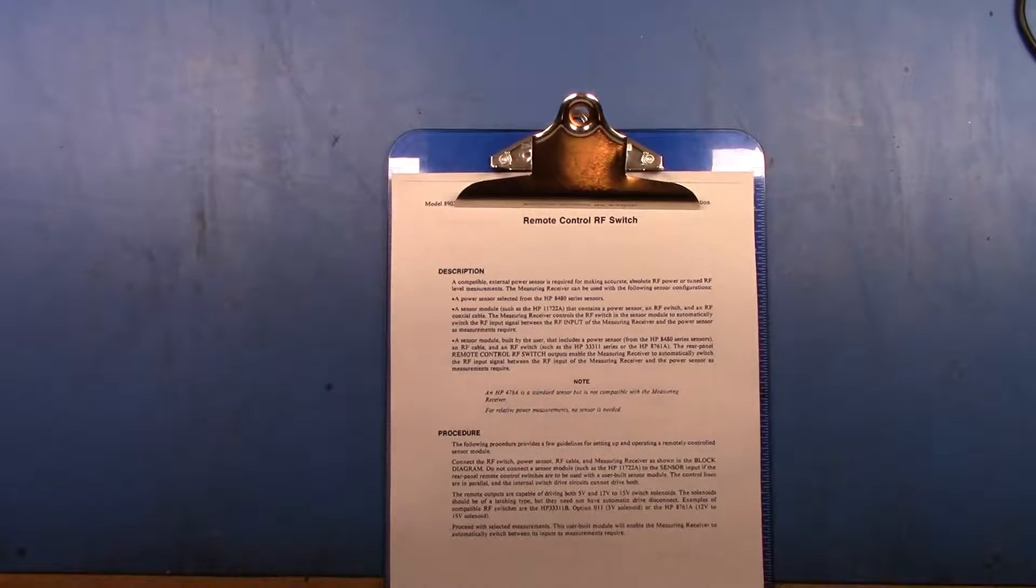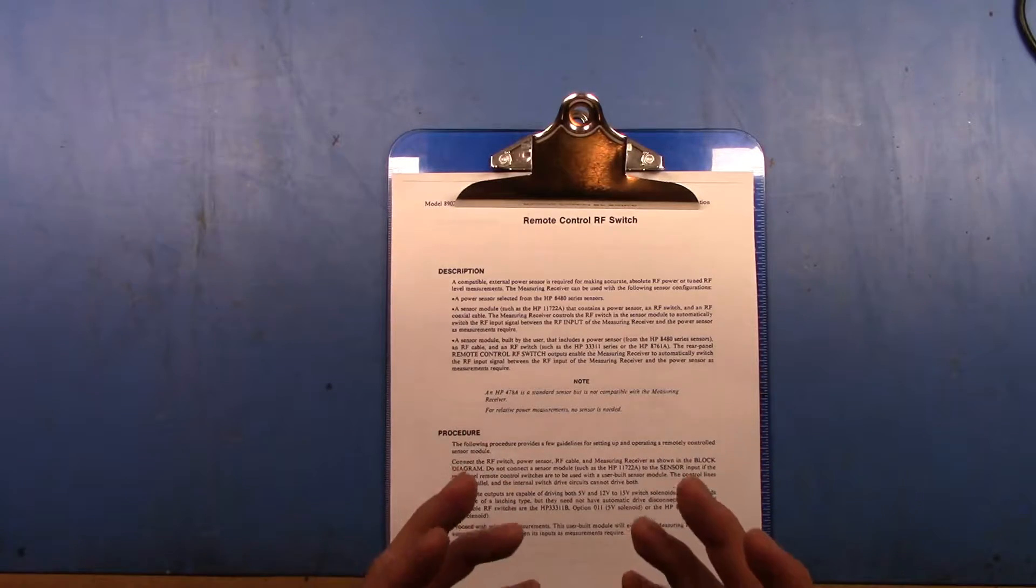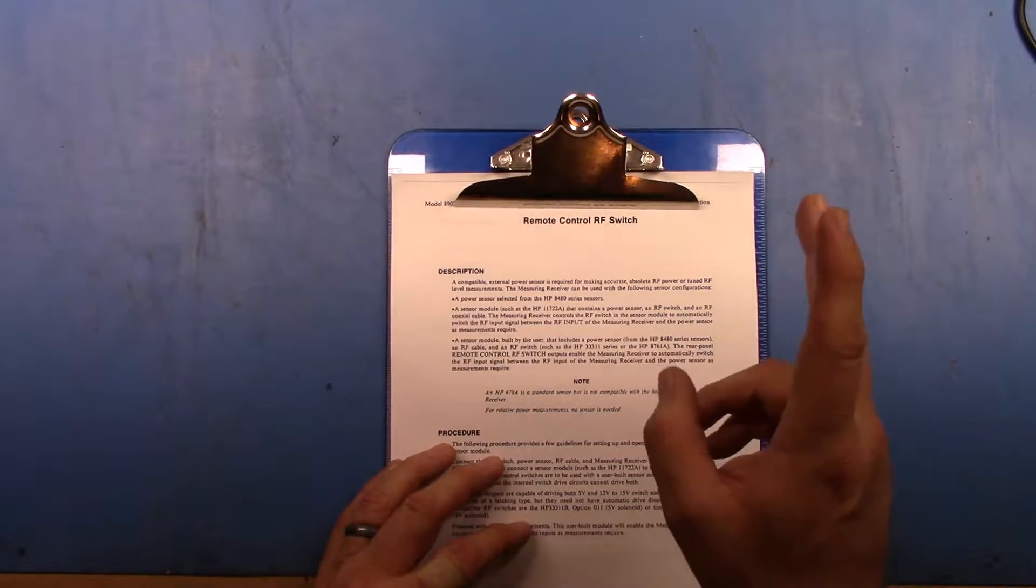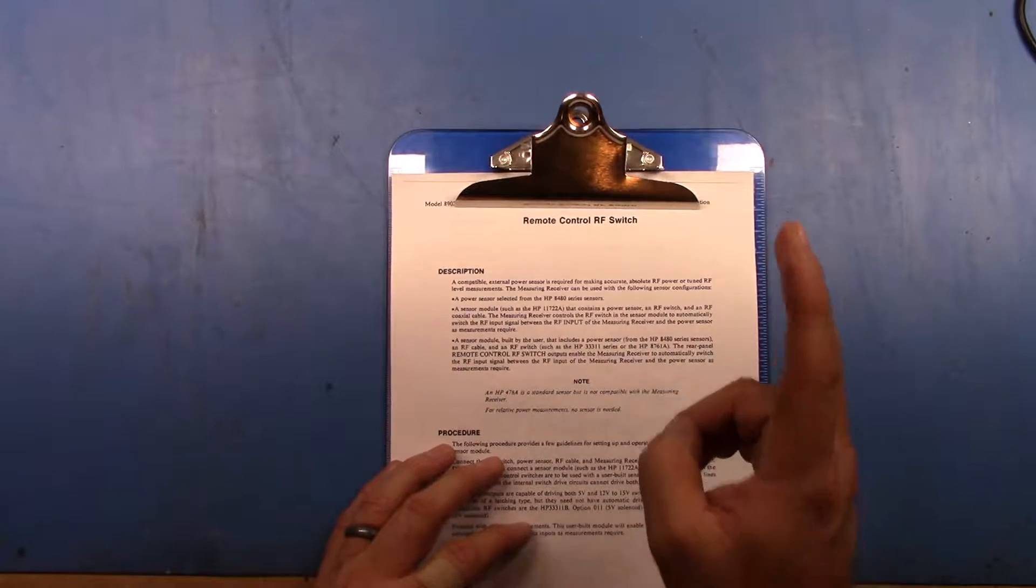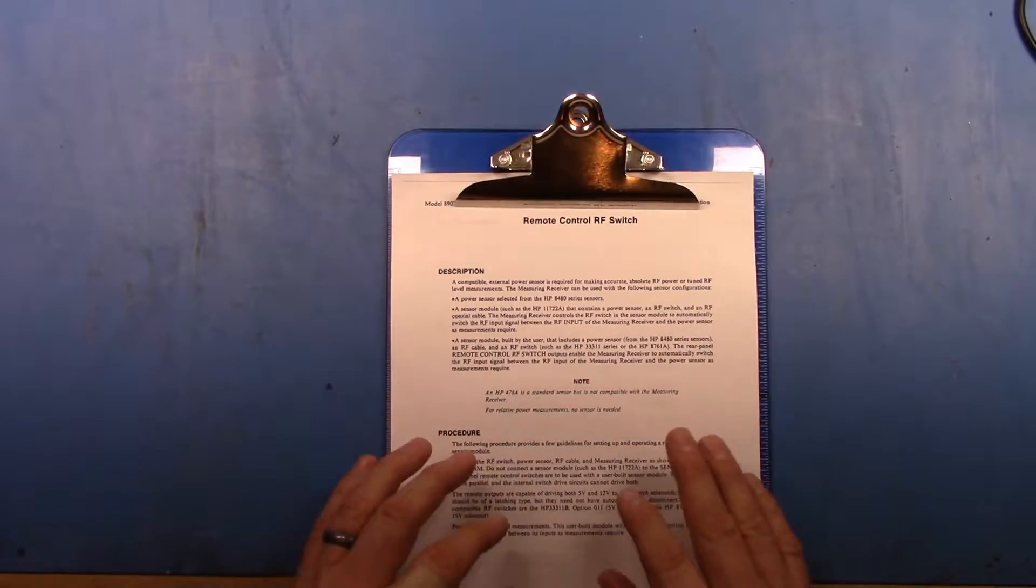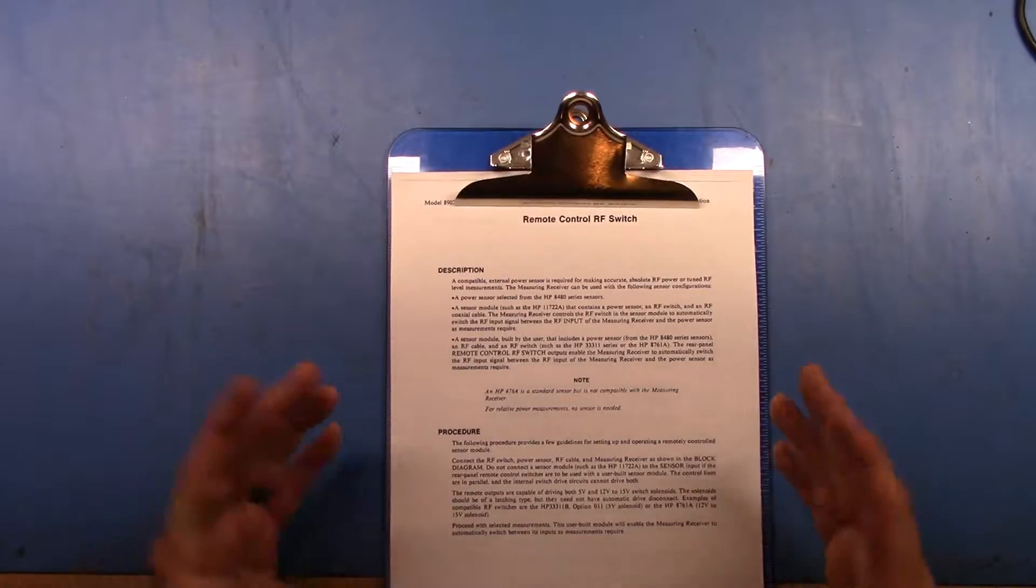So what do you do if you have an 8902A but you don't have the 11722A sensor? Now the 11722A sensor is a combined power and frequency sensor. Basically it plugs into the power sensor and the frequency slots on the 8902A and then will select back and forwards. Well what you can do is you can build your own. So let's take a look at what we need to do that.